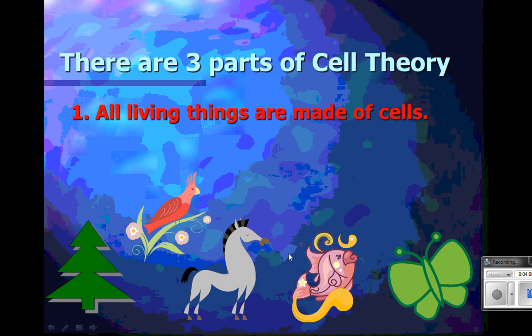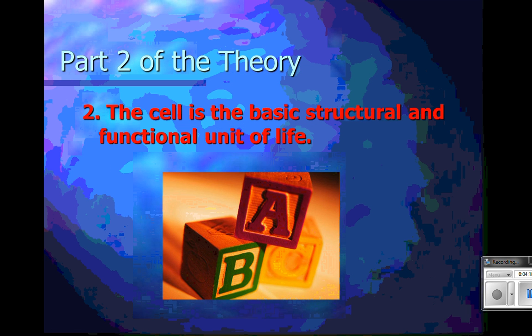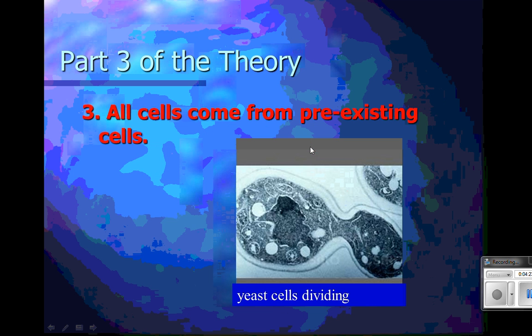They determined cell theory, and you need to write this down. Part one: all living things are made of cells. Part two: the cell is the basic structural and functional unit of life. Part three: all cells come from pre-existing cells. Those are the three parts of cell theory, and it was terribly important to biology.